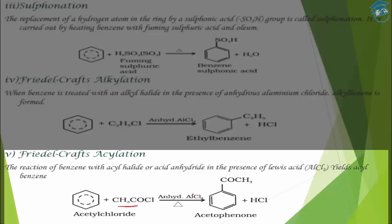Next is Friedel-Crafts acylation. In acylation, a CH₃CO (acyl) group is attached to the benzene ring. This is carried out using an acyl halide or acid anhydride with anhydrous AlCl₃ as a Lewis acid catalyst. The catalyst must be anhydrous — if water is present, it will attack the AlCl₃ and the reaction will not proceed. Using acetyl chloride with anhydrous AlCl₃, we get acetophenone.